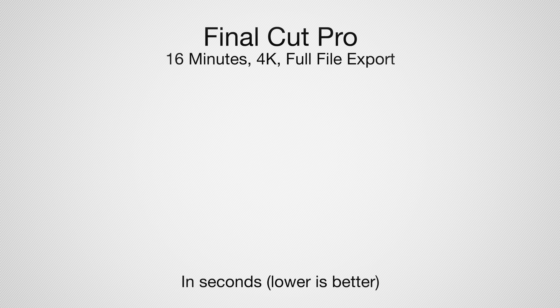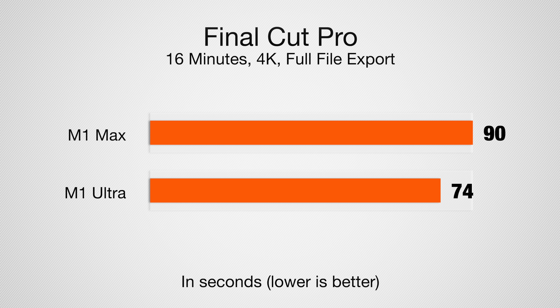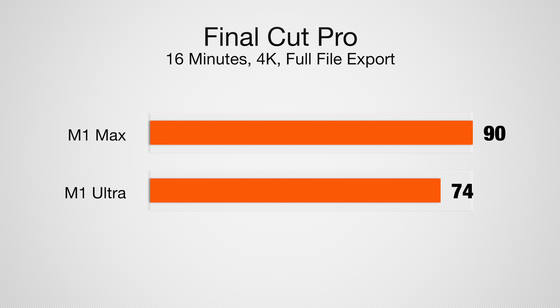That first export was just an Apple-compatible 4K video file. When I exported a full ProRes file from Final Cut Pro, a 16-minute video took 1 minute and 14 seconds on the M1 Ultra — which was better than the 1 minute and 30 seconds on the M1 Max. When you extrapolate that to a much longer or more complicated video, you can see how the M1 Ultra and its multiple video encode and decode engines help on those high-end exports, especially if you're working with 8K files.